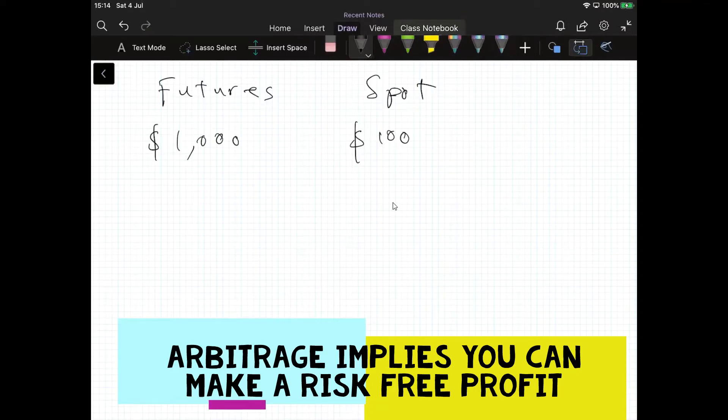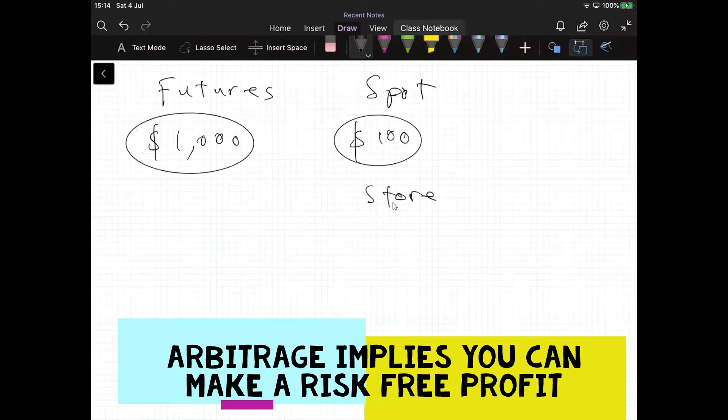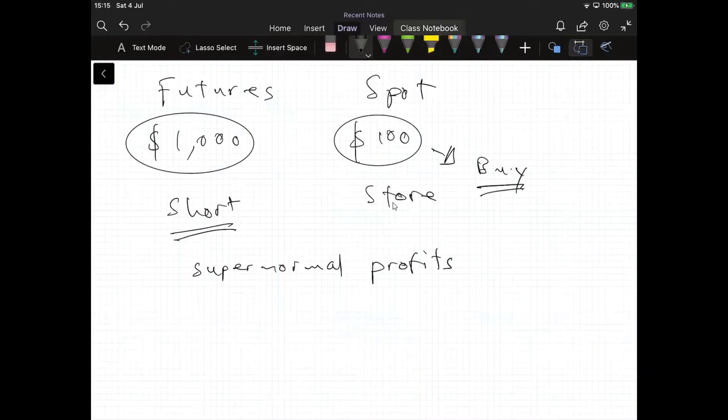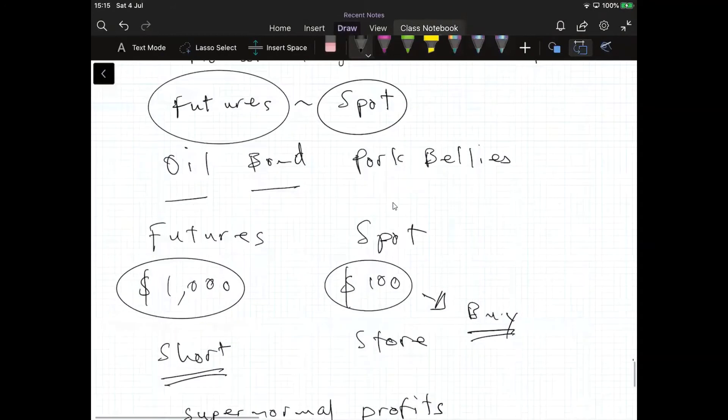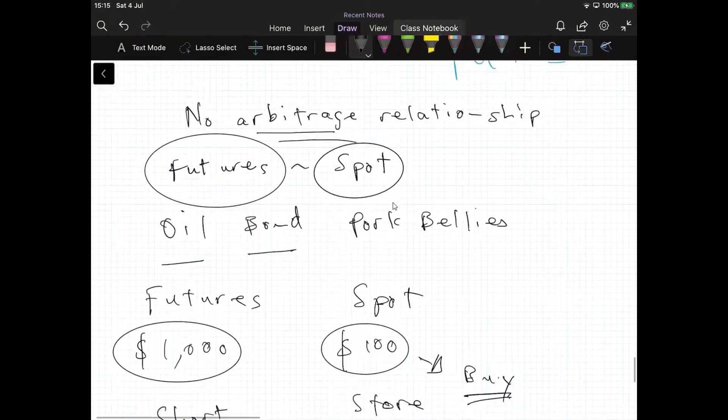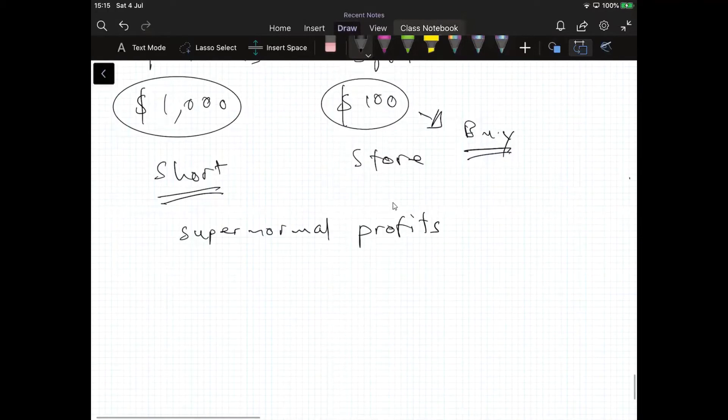Unless there's some reason why we can't store the commodity, we wouldn't envisage such a disparity opening between the two. If you could buy cheaply, you would buy today and sell or short in the future. Buy at the low price, selling at the high price should secure supernormal profits. That wouldn't appear sustainable. Once other traders discovered that arbitrage opportunities existed like this, they would all get into the market and make that same trade.